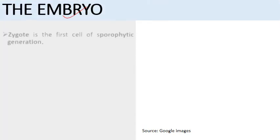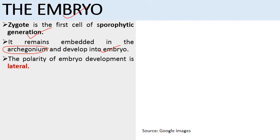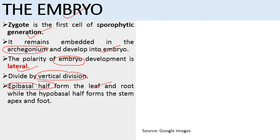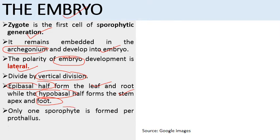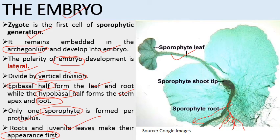The zygote remains embedded in the archegonium and develops into an embryo. The polarity of embryo development is lateral, which is unique in Adiantum. It divides by a vertical division to form two portions: the epibasal half, which forms the leaf and root, and the hypobasal part, which forms the stem apex and foot. Only one sporophyte is formed per prothallus. Roots and juvenile leaves appear first, and as the roots penetrate the soil surface and absorb nutrients, the sporophyte grows into the mature plant body.